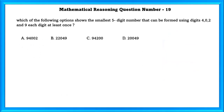Mathematical Reasoning Question No. 19: Which of the following options shows the smallest 5-digit number that can be formed using 4, 0, 2, and 9, each digit at least once? The answer is D: 20,049.